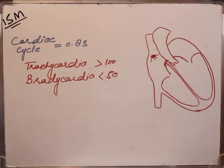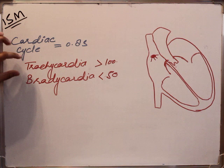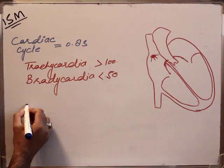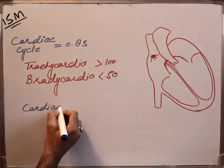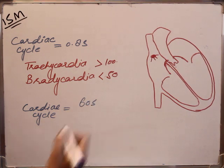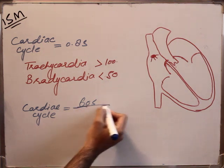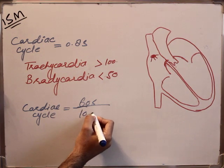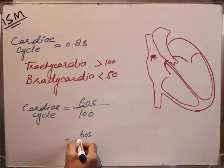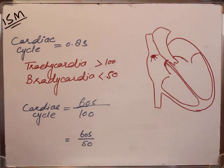So what happens to the cardiac cycle in case of tachycardia and bradycardia? There is a general formula: the cardiac cycle equals 60 seconds divided by the heart rate. In case of tachycardia that is 100, and in case of bradycardia it will be 50.